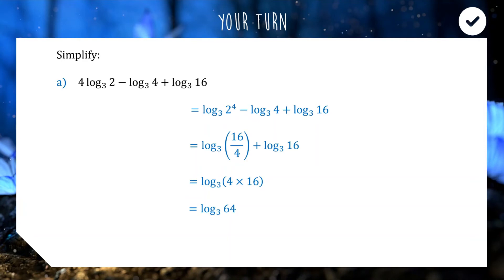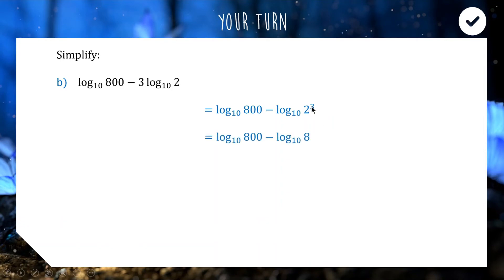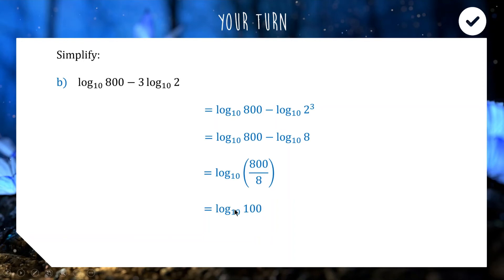For question b: log base 10 of 800 minus 3 log base 10 of 2. Once again we move the 3 up into the power of 2, getting log base 10 of 2 to the 3. Since 2 cubed is 8, we now subtract to divide the subjects: log base 10 of 800 over 8, which is 100. This is a nicer result because log base 10 of 100 asks: 10 to the power of what gives 100? The answer is 2, since 10 squared equals 100.